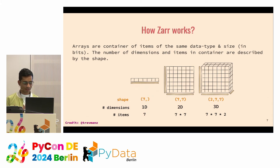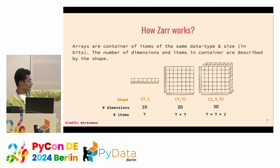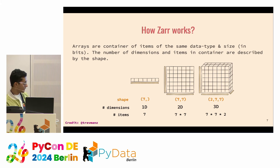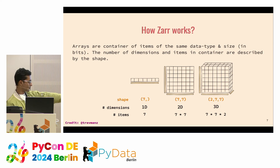Arrays are containers of items with the same data type and size. The number of dimensions and items are described by the shape. Here we have a 1D array with a shape of seven, then a 2D array which is seven by seven, and then a 3D array which is seven by seven by two. This is how you organize your arrays into container items, and it's necessary to have the same data type across all items. This illustration was made by Trevor Mann — huge shout out to him.